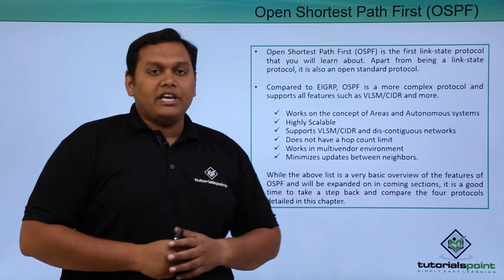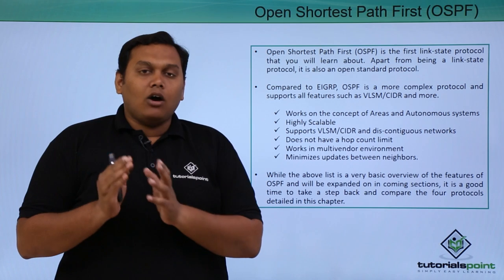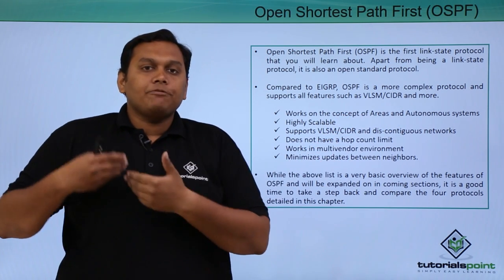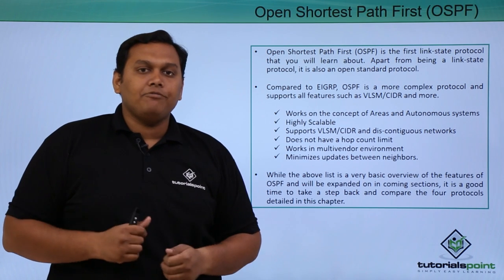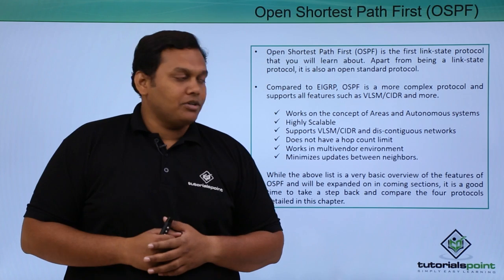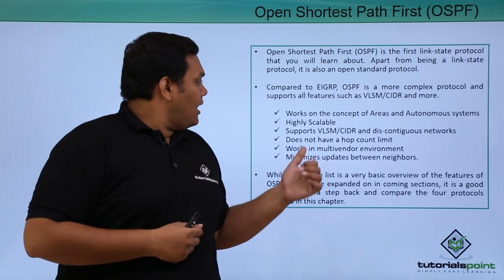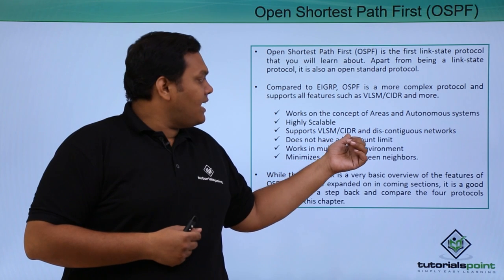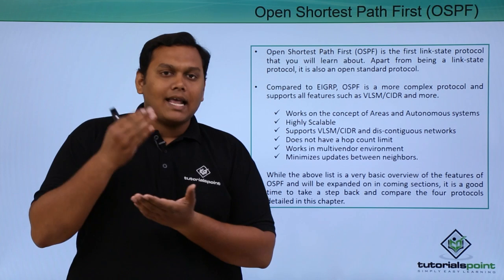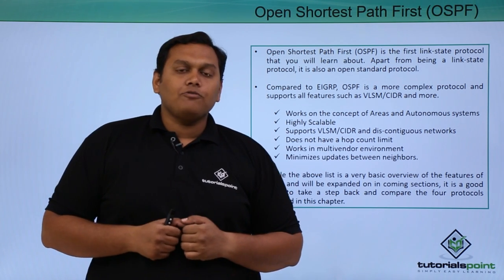Compared to EIGRP, which is a distance vector protocol, OSPF is more complex and also supports VLSM and CIDR and many more. The features of OSPF include working on the concept of areas and autonomous system numbers, being highly scalable for larger networks, and supporting VLSM, CIDR, and discontinuous networks. VLSM supports classless networks and slash notation as well.